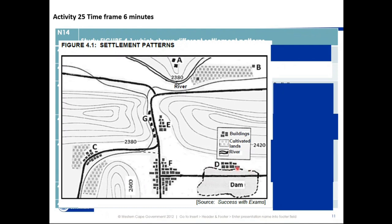Numbers A and D can also be a nucleated settlement, but the difference is that this settlement is located near a dam — it relies completely on the water. So where water is a problem, it is called a dry point settlement. Here, where the settlement is dependent on the water, that is called a wet point settlement.